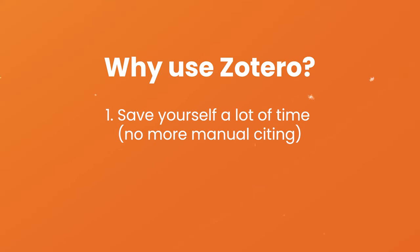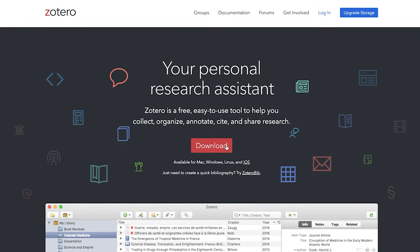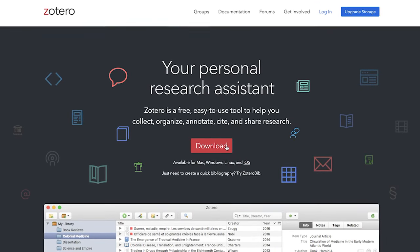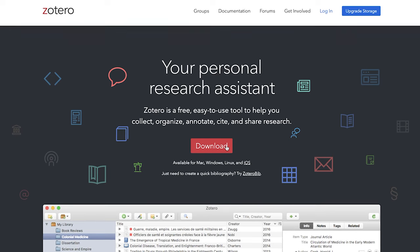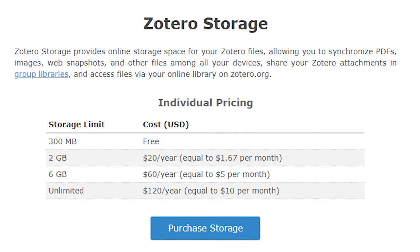Simply put Zotero takes care of the time-consuming and error-prone task of formatting citations and references, which saves you loads of time and also makes sure that it is done 100% accurately — something which is pretty much impossible to do if you manage your references manually. Best of all Zotero is completely free to use up to a data storage limit of 300 megabytes, which if you're just storing reference data will be more than enough.